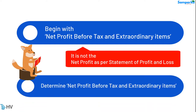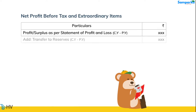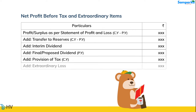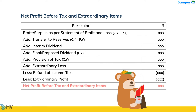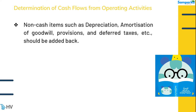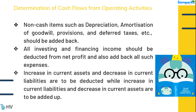Determine Net Profit Before Tax and Extraordinary Items. For the determination of cash flows from operating activities, non-cash items such as depreciation, amortization of goodwill, provisions, and deferred taxes should be added back. All investing and financing income should be deducted from net profit, and all such expenses added back. Increase in current assets and decrease in current liabilities are to be deducted, while increase in current liabilities and decrease in current assets are to be added.